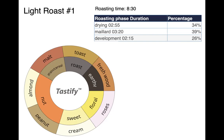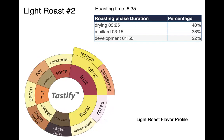Second example — light roast number two, same Cauca Colombia coffee. The roasting time was still relatively fast but the development time was shortened by allowing for a slightly higher rate of rise. Now there was a lot more complexity in the cup — citrus, tangerine, and some roses — but there were still some grain, cereal, and rye notes. There was improvement but it was still not what we were looking for.